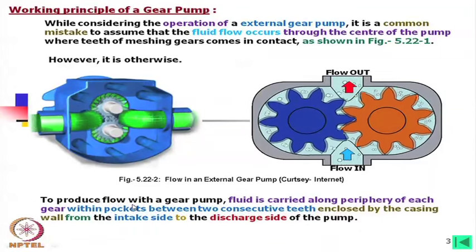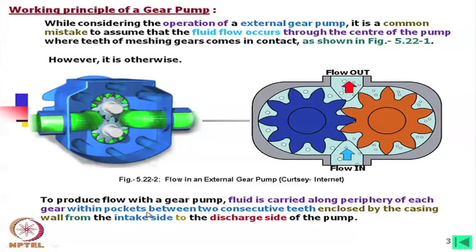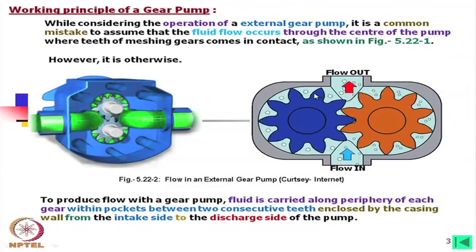To produce flow, fluid in a gear pump is carried along the periphery of each gear within pockets between two consecutive teeth enclosed by the casing wall, from the intake side to the discharge side of the pump. Within one revolution, the number of pockets is exactly double the number of gear teeth — so one may consider that as the number of chambers in a gear pump. With an increase in number of chambers, the ripple actually reduces.